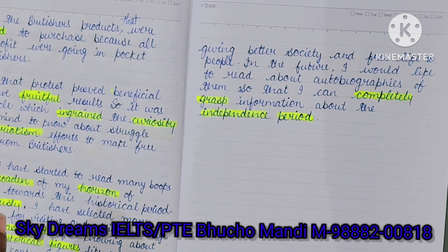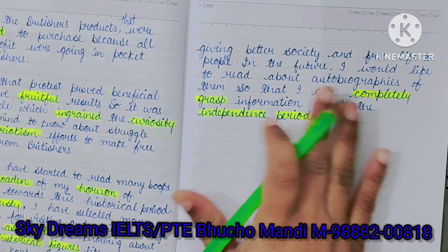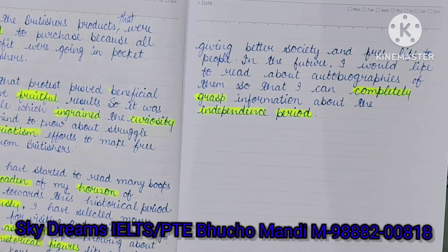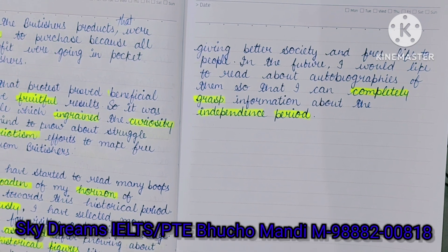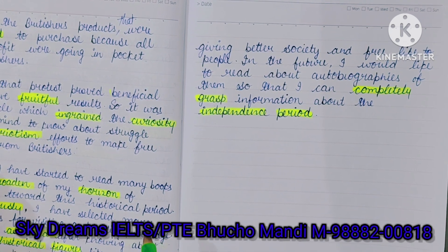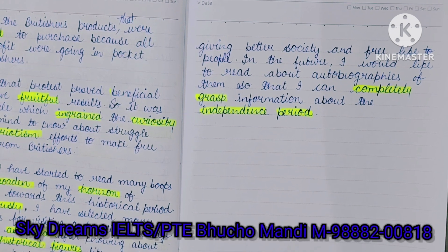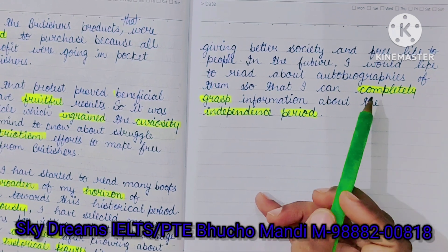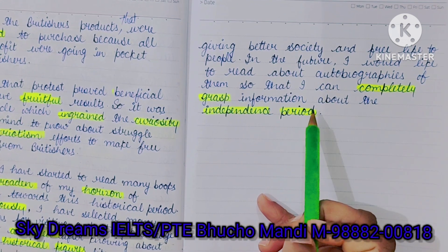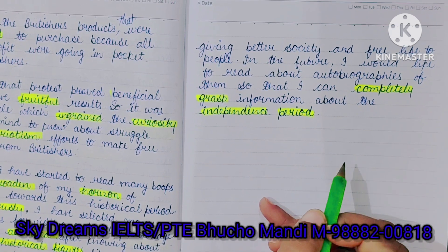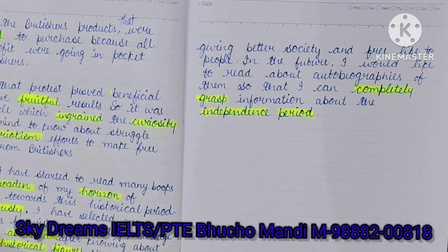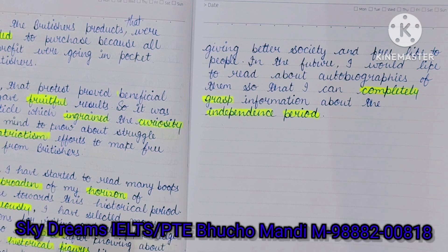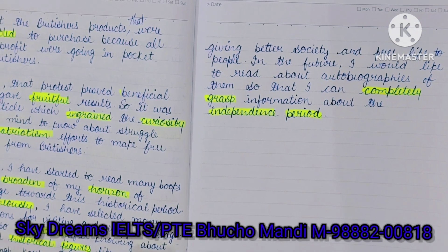They sacrificed for a free life for people so that people can live a comfortable and convenient life. In the future, I would like to read the autobiographies of these figures so that I can get more in-depth knowledge regarding these characters, which will be helpful for knowing about the historical and independence period. The independence period happened in 1947, where a lot of people laid down their lives and took a great position in patriotism.